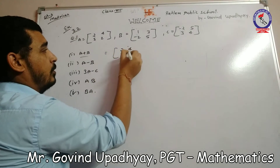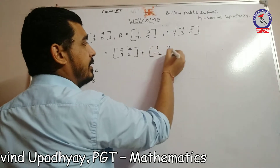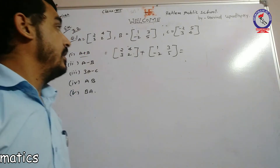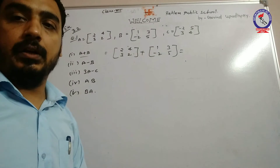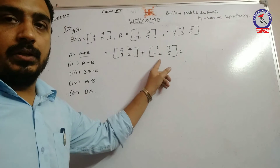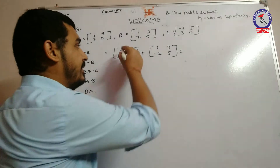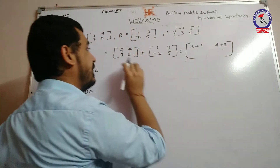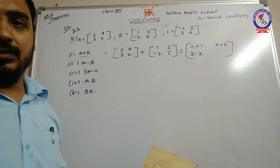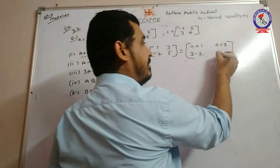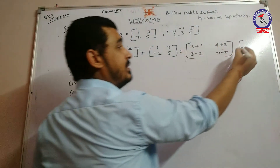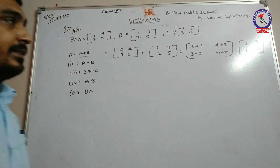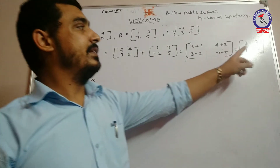A is [2, 3; 4, 2] plus [1, -2; 3, 5]. We do addition of corresponding values. So 2+1, 4+3, 3+(-2), and 2+5. The answer will be: 2+1=3, 4+3=7, 3-2=1, and 2+5=7. So the answer of A plus B will be [3, 1; 7, 7].